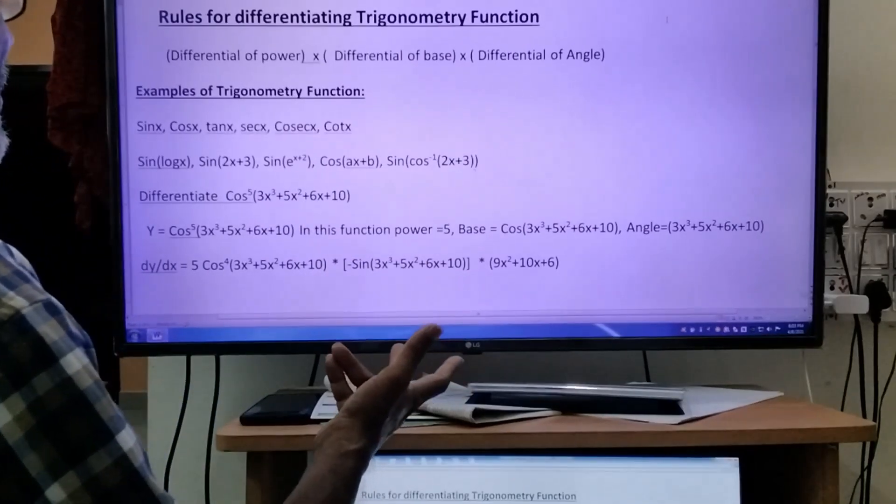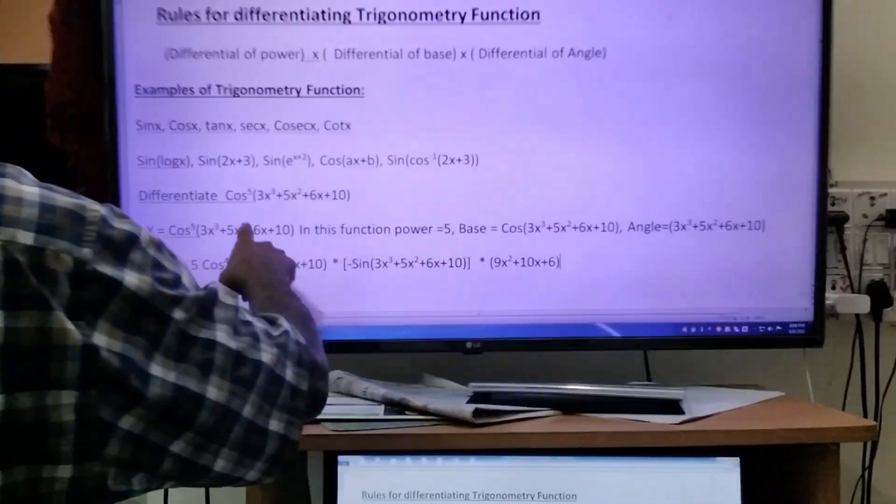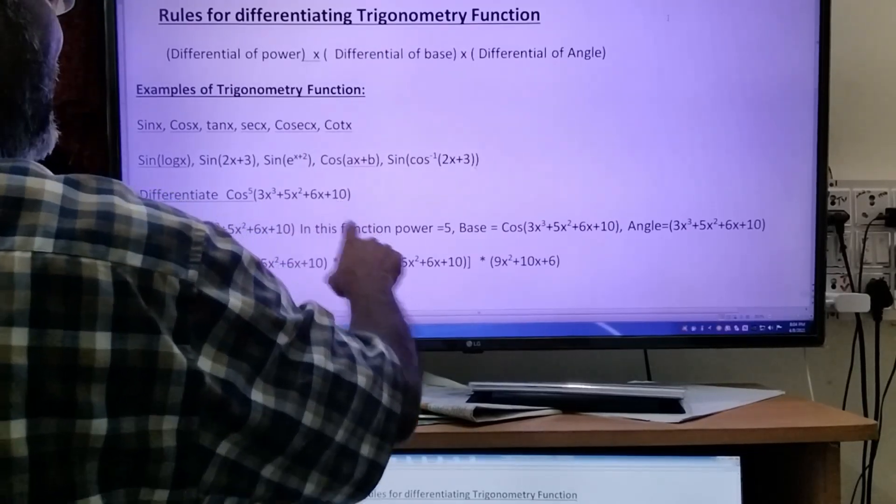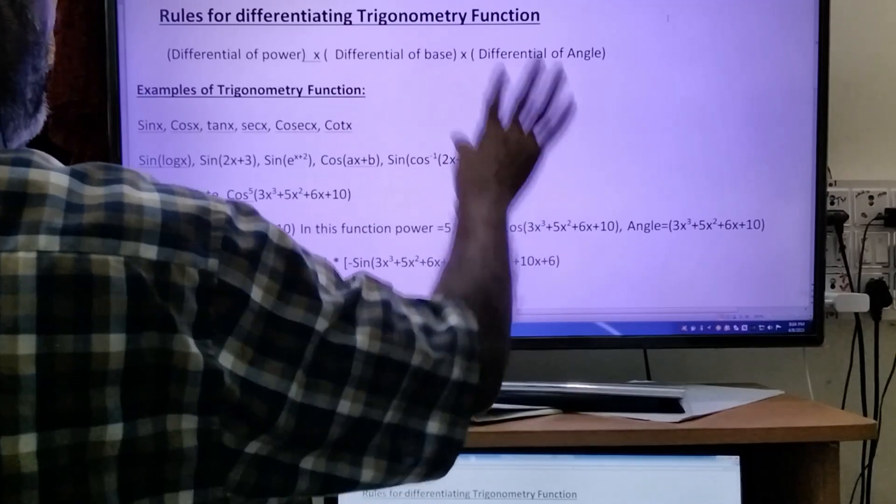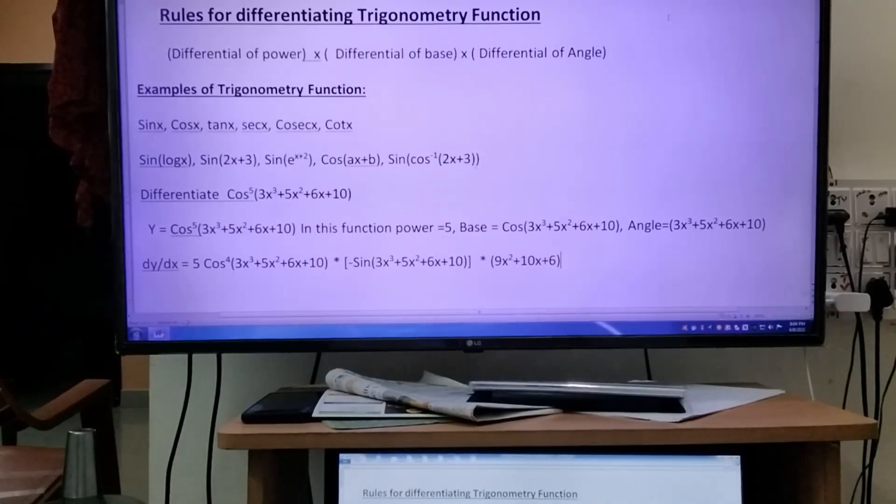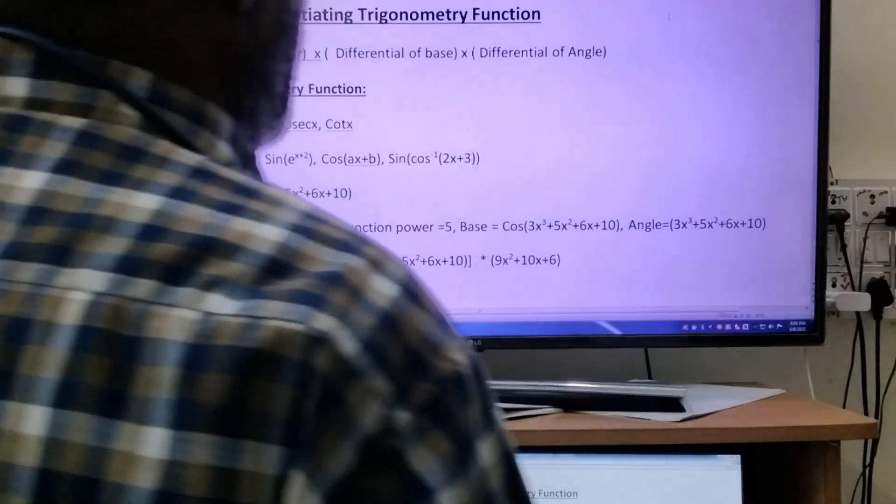Finally, what do I have to do? The differential of angle. That's why I put 9x² + 10x + 6, because the differential of 10 is 0, so it's not applicable. Students, are you able to understand this? If you have any doubt you can ask me.